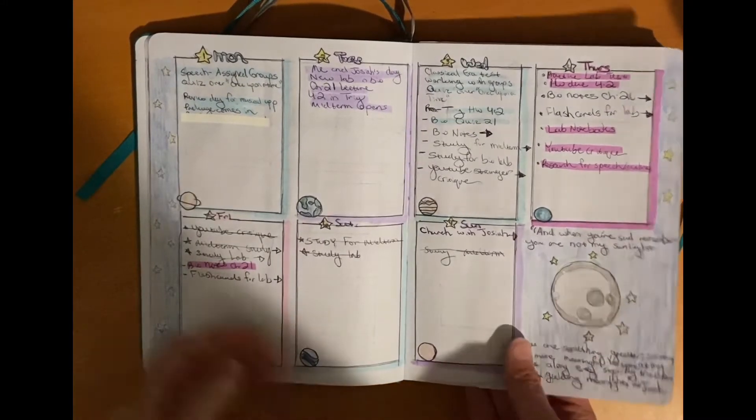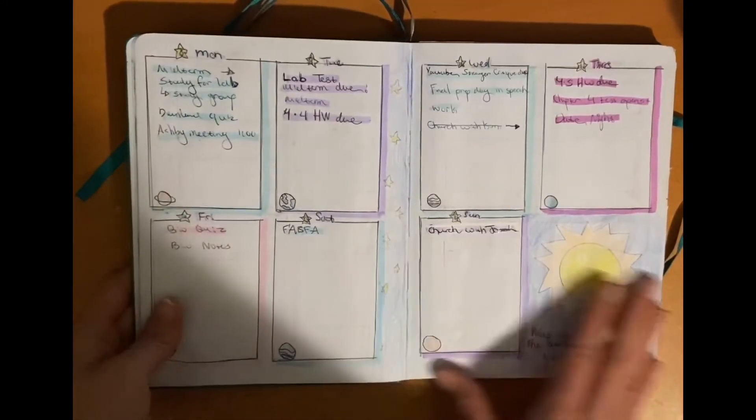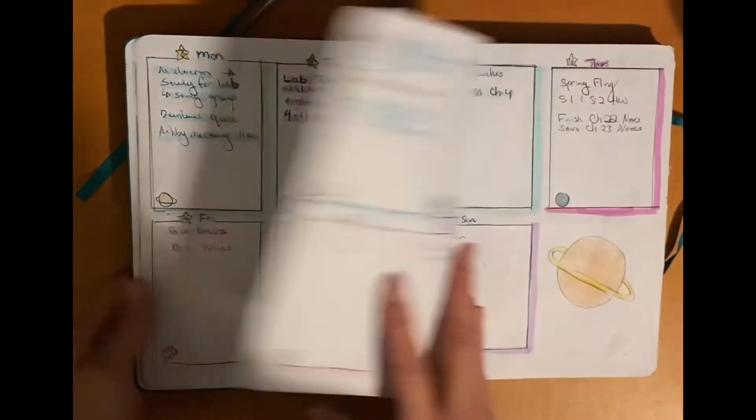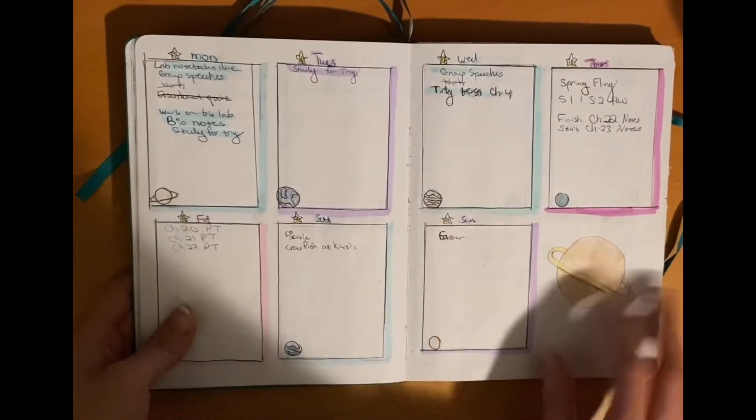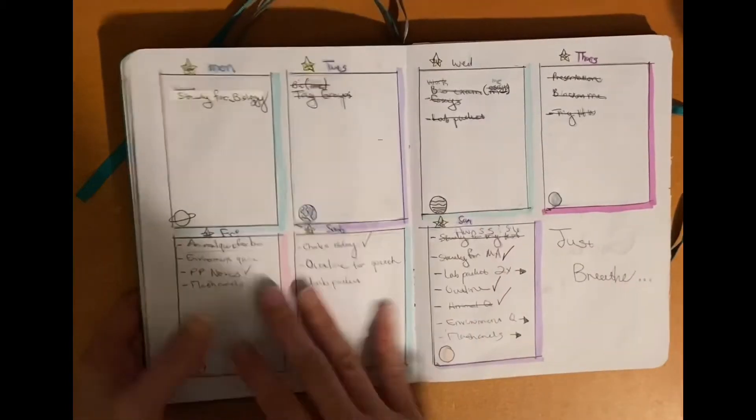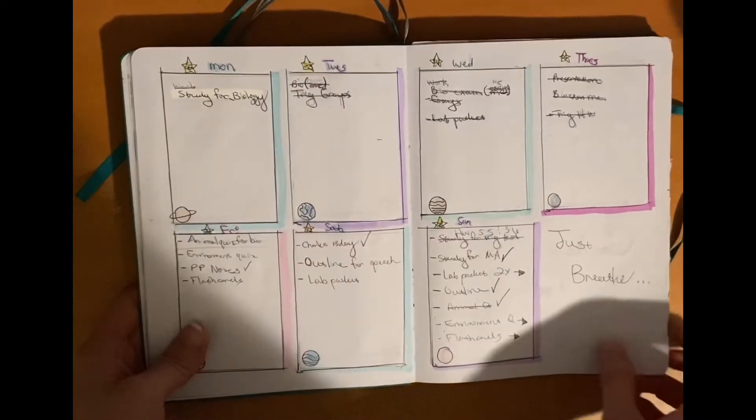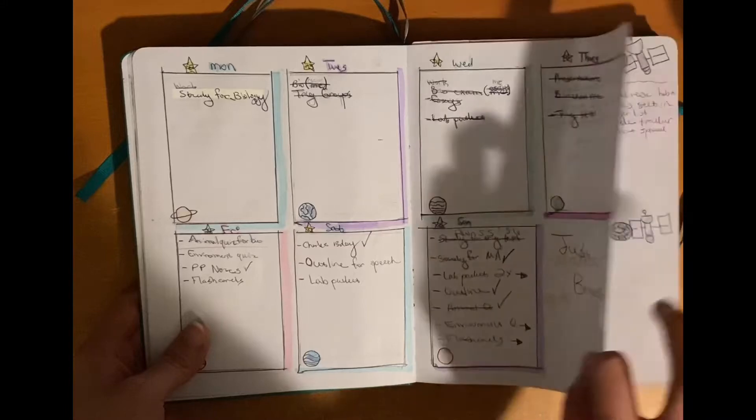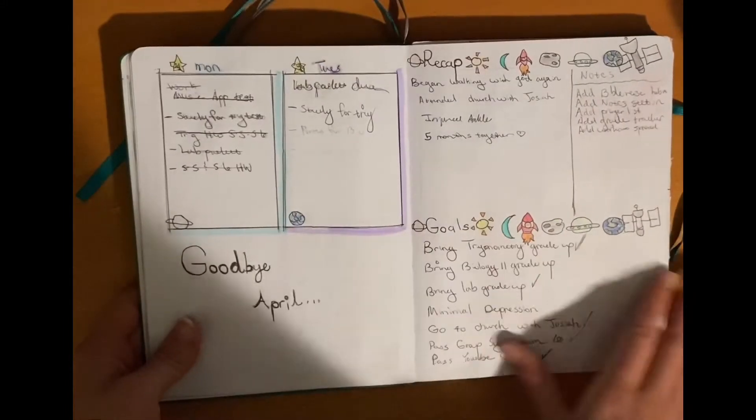Starting out with bullet journaling, I did not know that there was this beautiful thing called simplicity to it. So I went all out with this theme, colored everything in, and it took so long that I was like I don't know if I even want to continue to do this. I just used Midliners and stuff like that. This was before I got my Tombows.